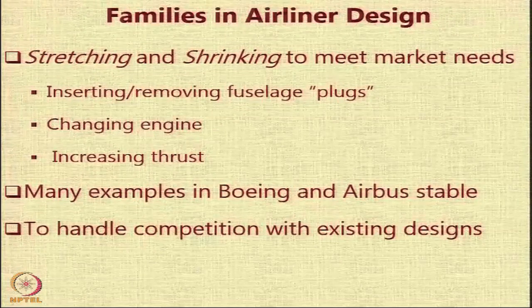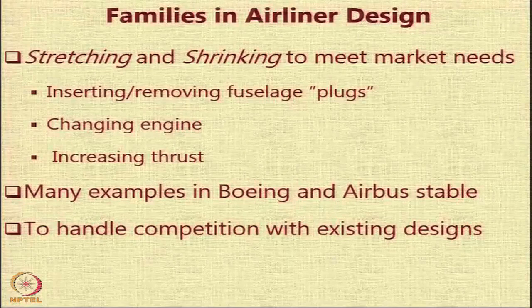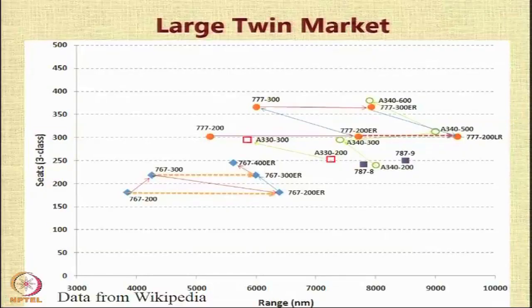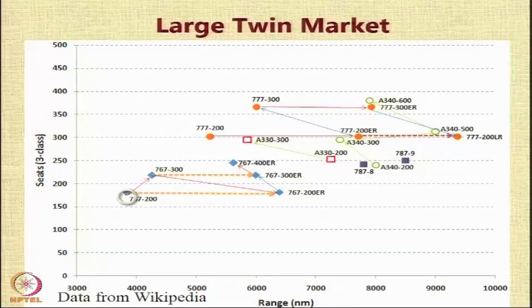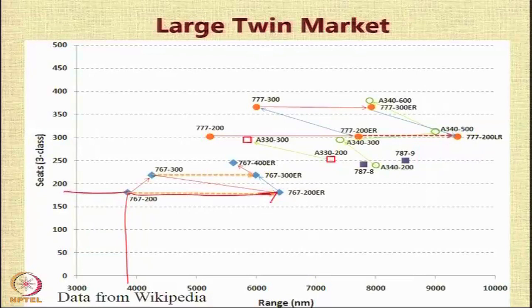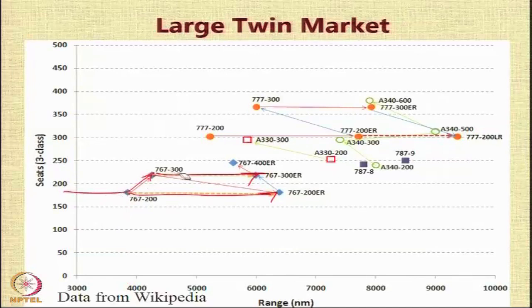The aim of this exercise is to ensure that for every aircraft a competitor offers, there is an equivalent in your own product line. You give the airline a choice — if you want an aircraft to compete with a rival's offering, here is our solution. For example, looking at the large twin market, the Boeing 767-200 served a particular range and capacity and has been stretched through multiple variants to form a family.